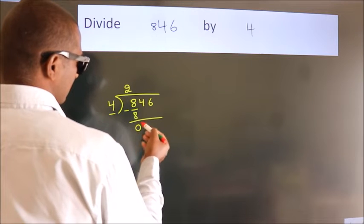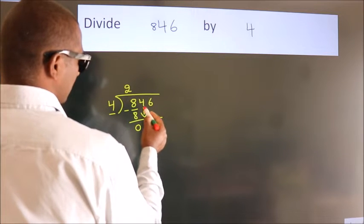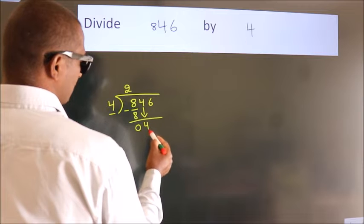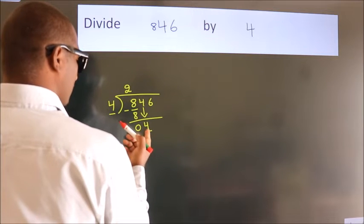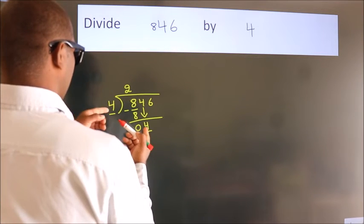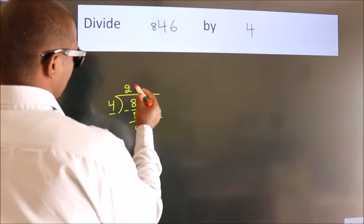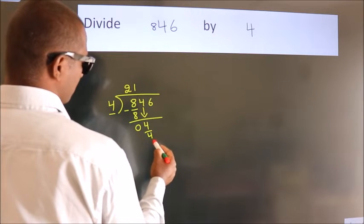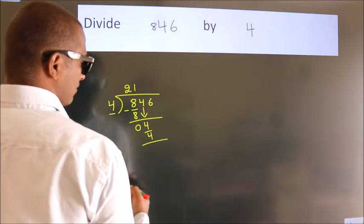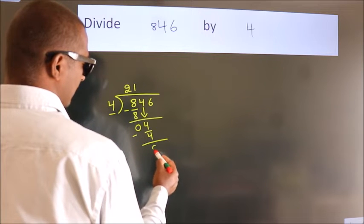After this, bring down the beside number, so 4 down, so 4. When do we get 4? In 4 table, 4 ones, 4. Now we subtract, we get 0.